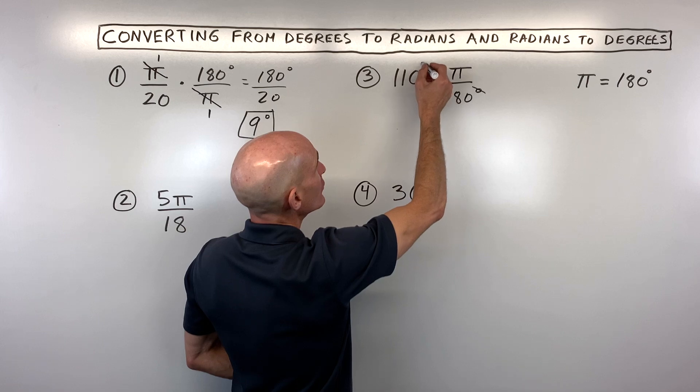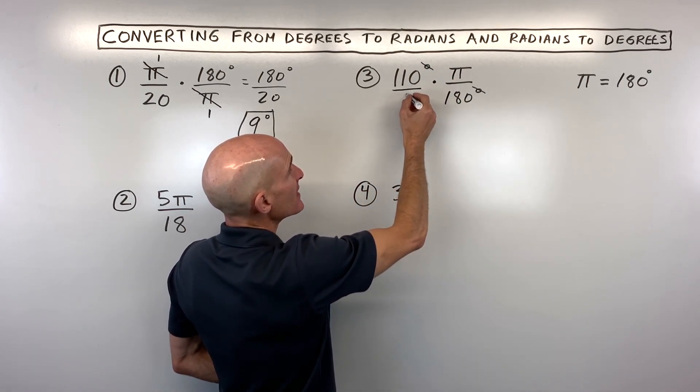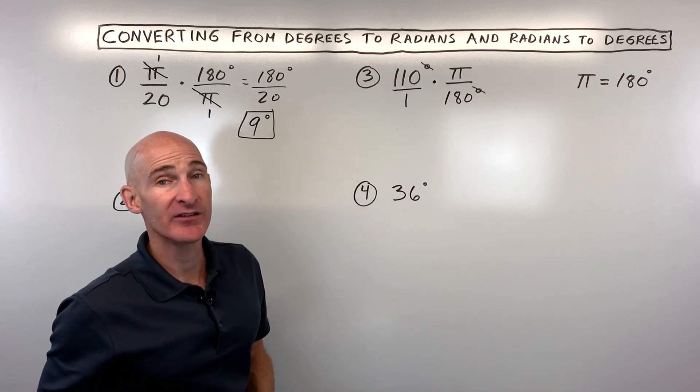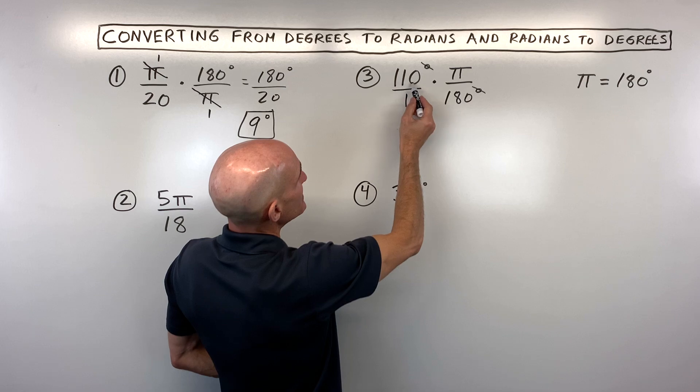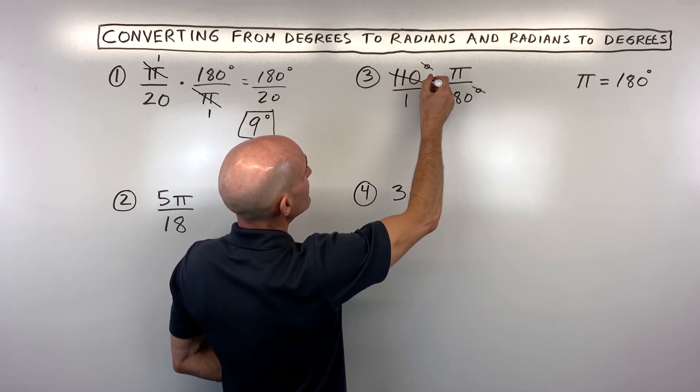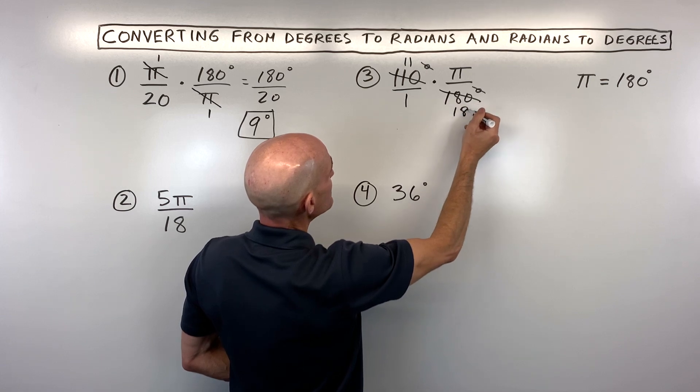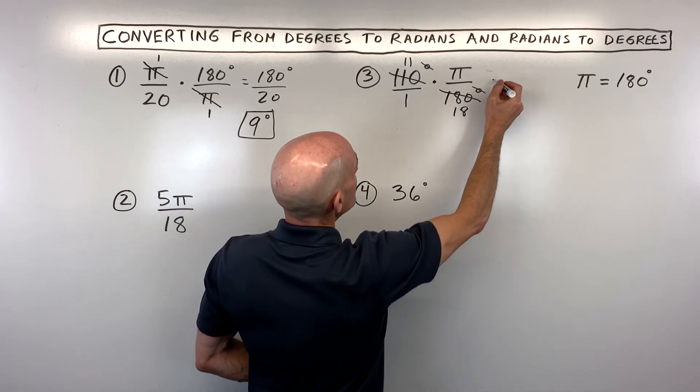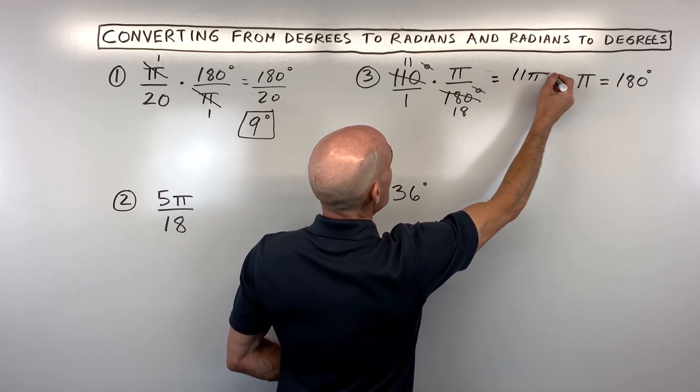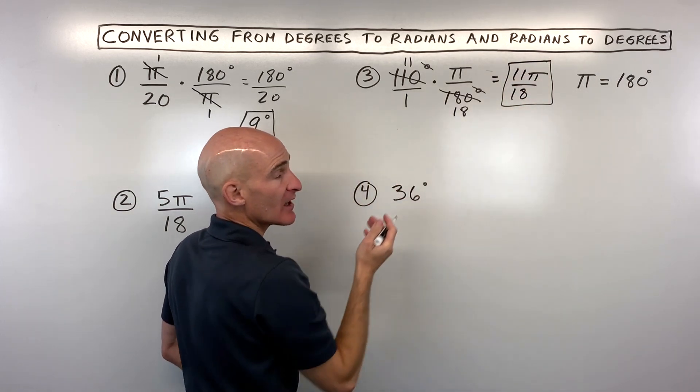And you can think of 110 as like 110 over 1. Anything divided by 1 is itself. You can do a little bit more cross reducing here. You can say 10 goes into 110 11 times and 10 goes into 180 18 times. So now when you multiply the numerators together and denominators together, you're getting 11 pi over 18 radians. And you got it.